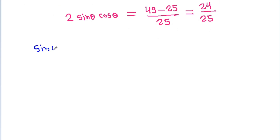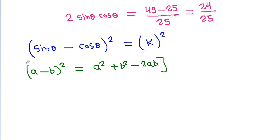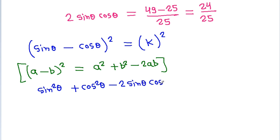Now let sin theta minus cos theta be equal to k. If we square both sides, using (a - b)² = a² + b² - 2ab, this will be sin²theta plus cos²theta minus 2 sin theta cos theta, that is equal to k².